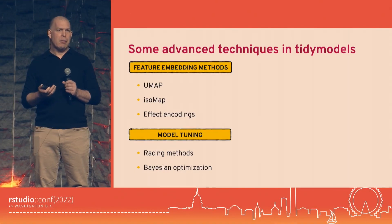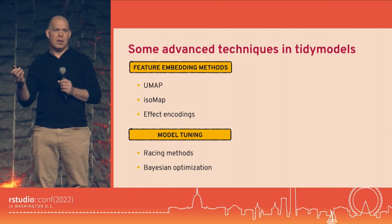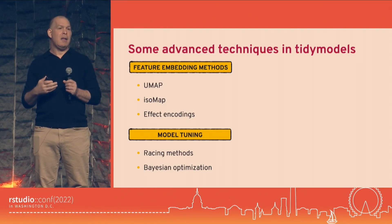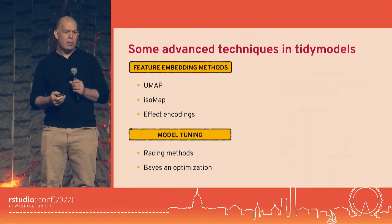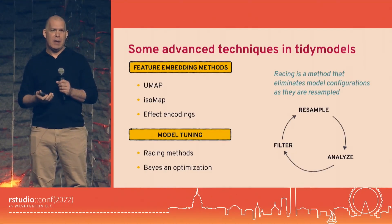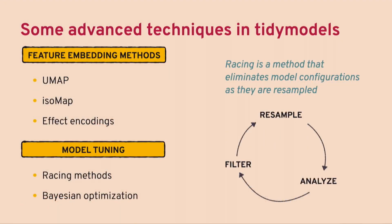Racing is an example of really efficient grid search. In grid search you pre-define a number of candidate values for your tuning parameters — like trying seven, twelve, and two hidden units. The problem is you don't know if some of those choices are any good until you're done with all the computations. Racing is a dynamic way of doing that: as you start doing model tuning, it looks at results as they happen and estimates the probability that each combination will be the winner in this race, letting you do things very efficiently.